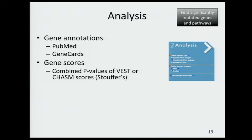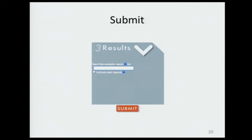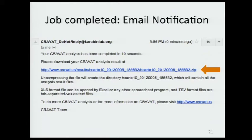There's a bit more to our analysis. We provide gene annotations from PubMed and Gene Cards. We also provide gene-level scores, which are combined p-values of VEST and CHASM scores — right now using Stouffer's method to come up with these gene scores. Finally, you click a submit button. When your job is done, you get an email and a link to a results file, which is a zipped archive.